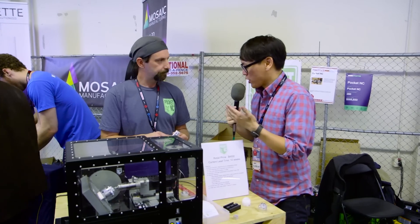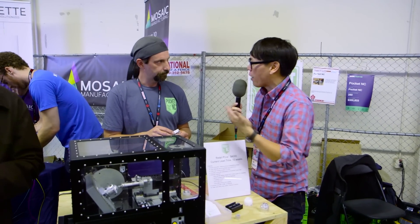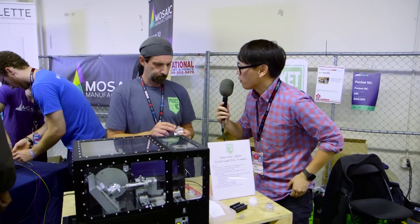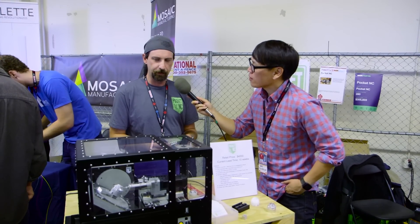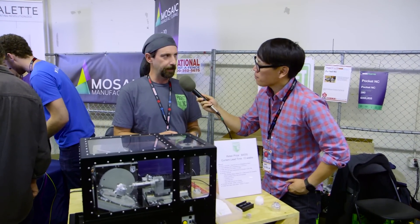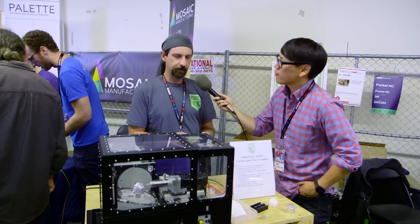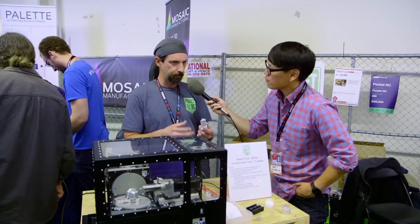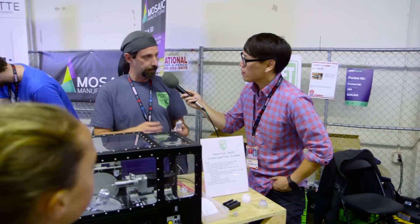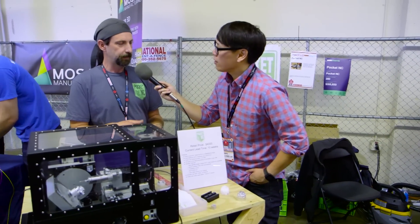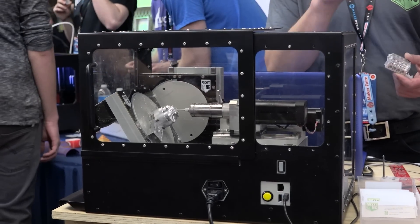You mentioned model making as one of the potential uses. What are you finding that your backers are using the Pocket NC for? You know, there are so many uses for this machine. I do know that some people are interested in making 3D dental implants, so they can take a tooth, extract it from a patient, 3D scan the root system, and machine it and give them a new replacement root. So they can come in and get a complete brand new tooth.